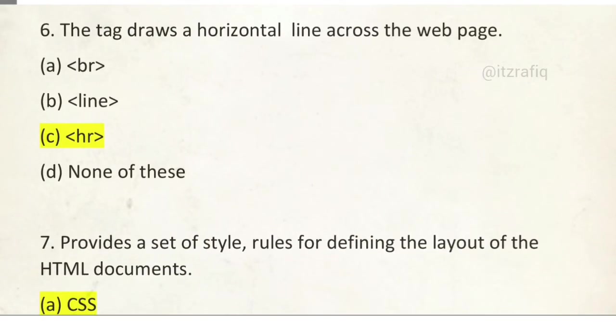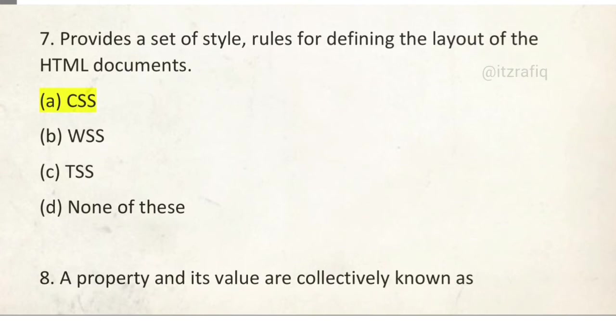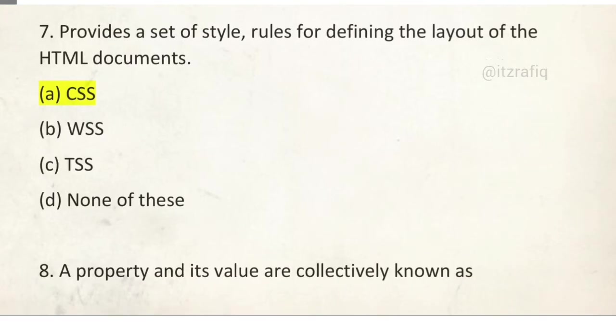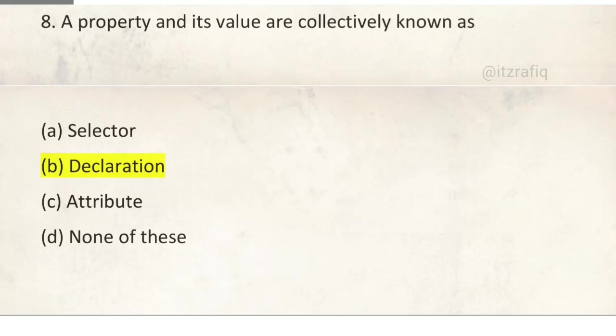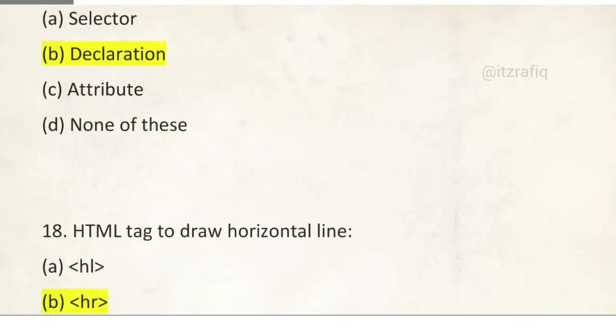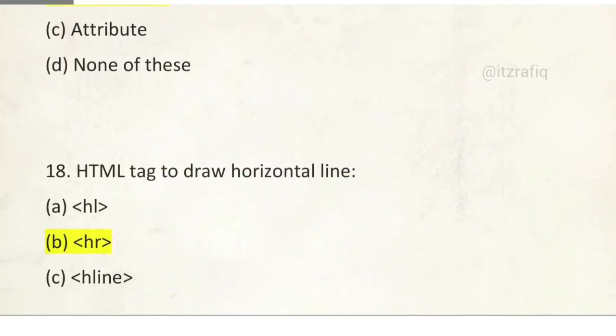Number 6: The tag draws a horizontal line across the webpage. It will be HR. Number 7: Provide a set of style rules for defining layout of the HTML document. It is CSS. Number 8: A property and its value are correctly known as declaration. Then a few questions are missed because I missed that question bank photo. So about 10 MCQ questions are missing here.